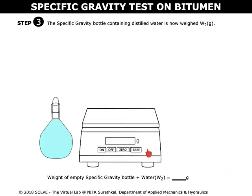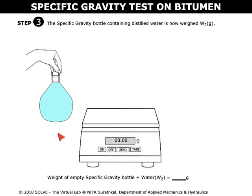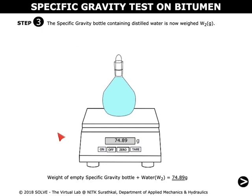Switch on the weighing machine and click on tare to clear the weight. Click on the bottle with the distilled water, taken out from the water bath, to be placed in the weighing machine and note down the weight, that is W2.